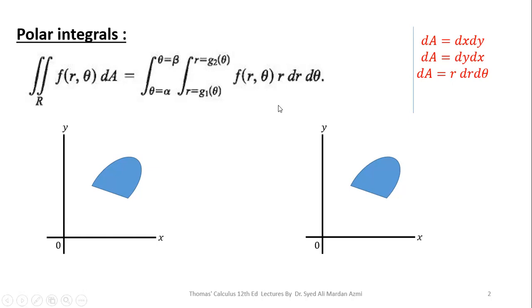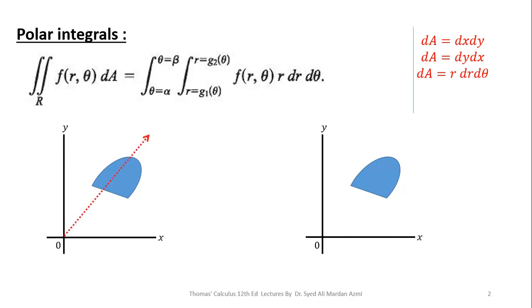After learning how a polar integral looks — which is the inner variable and which is the outer variable — next we will learn how we can evaluate the limits of r. To calculate the limits of r in a region, we will pass an arrow starting from the origin and crossing the region. The boundary or point through which this arrow enters our region will provide the lower limit of r, and the boundary or point through which this arrow exits will provide the upper limit of r.